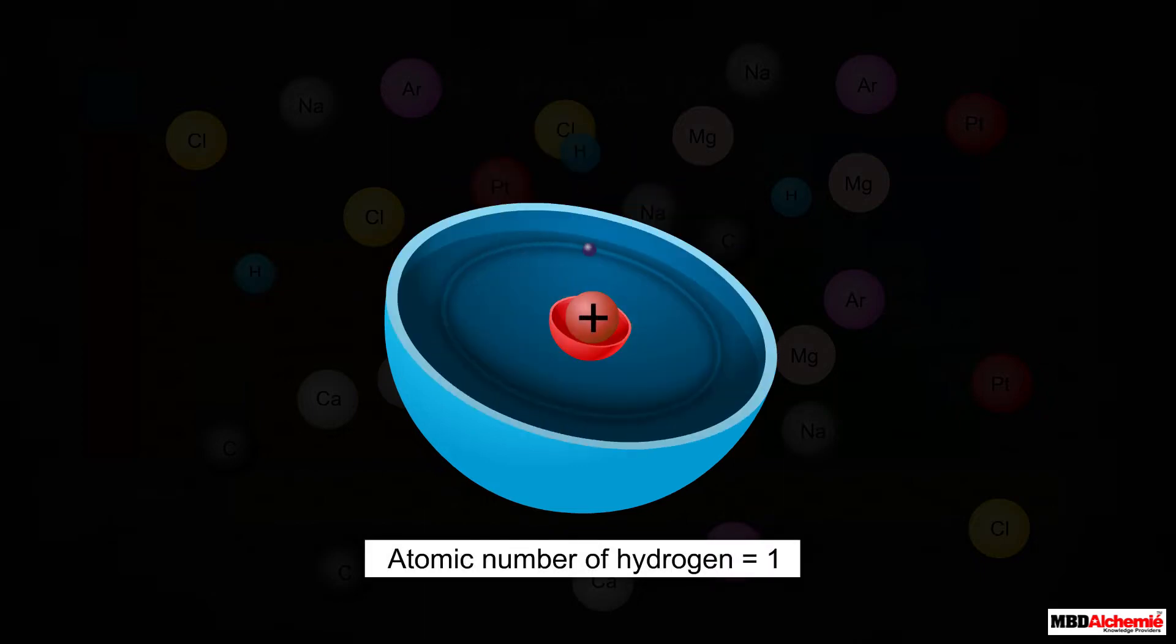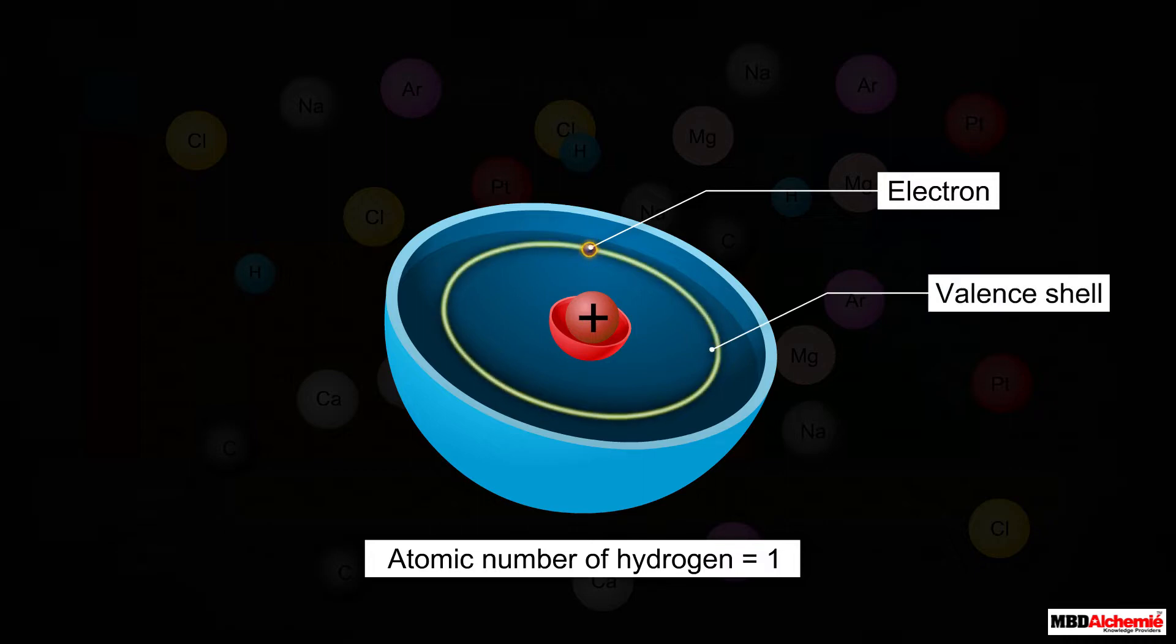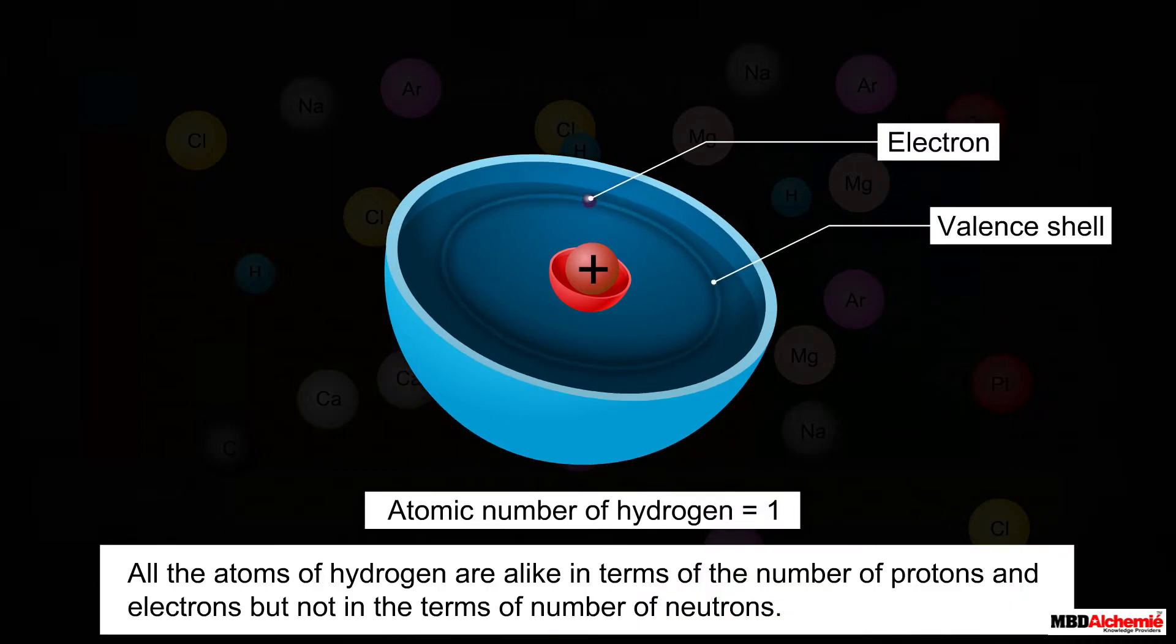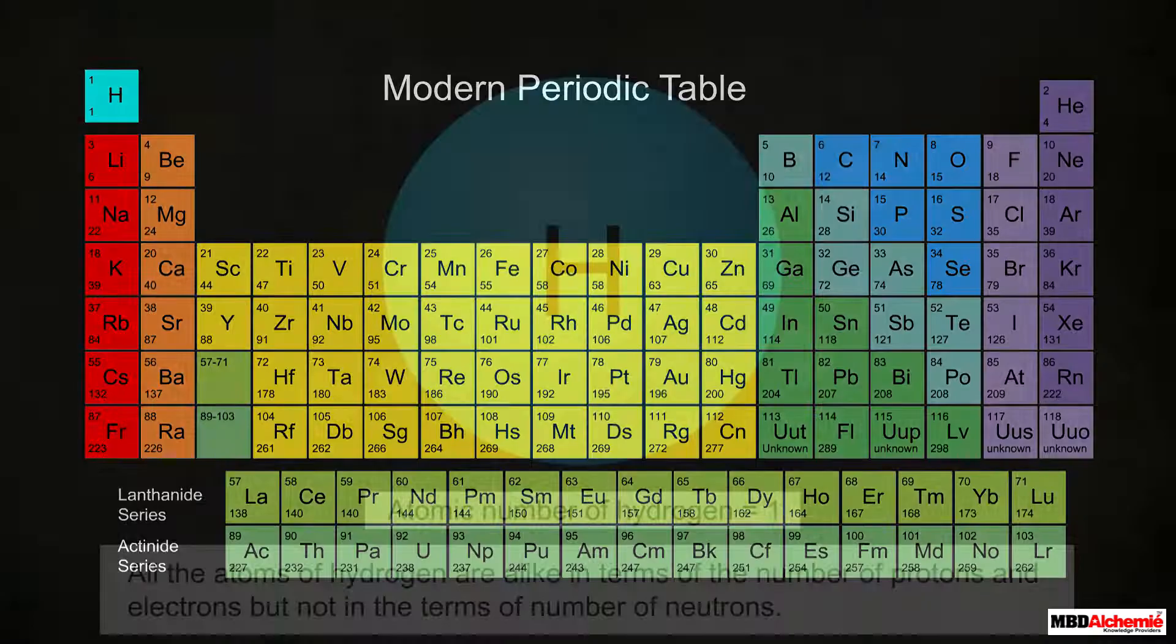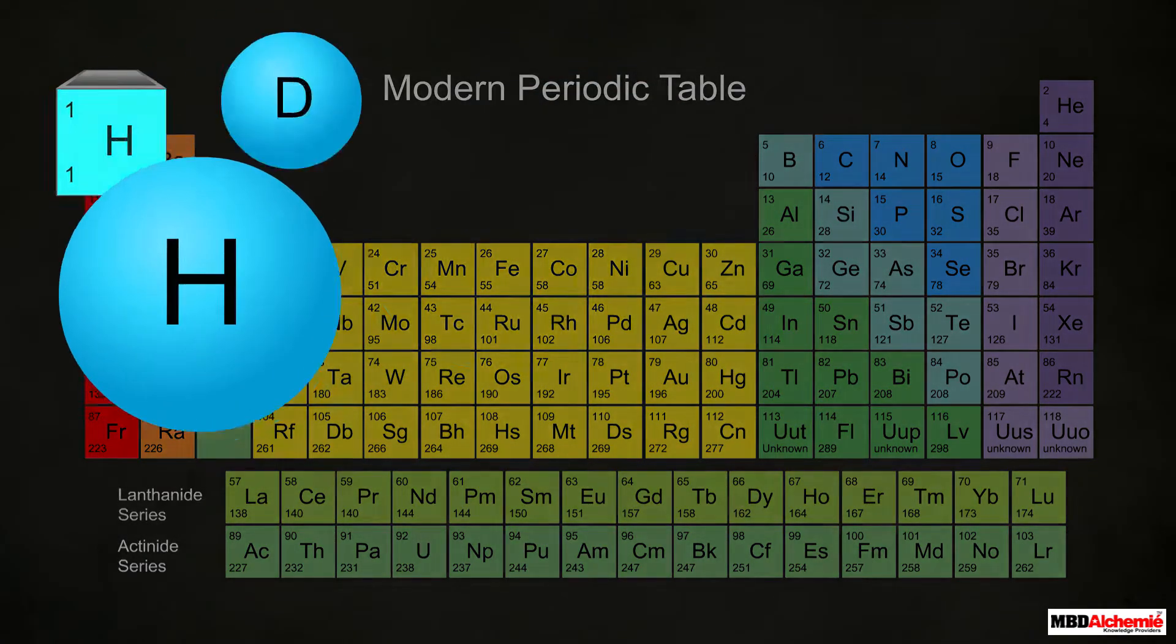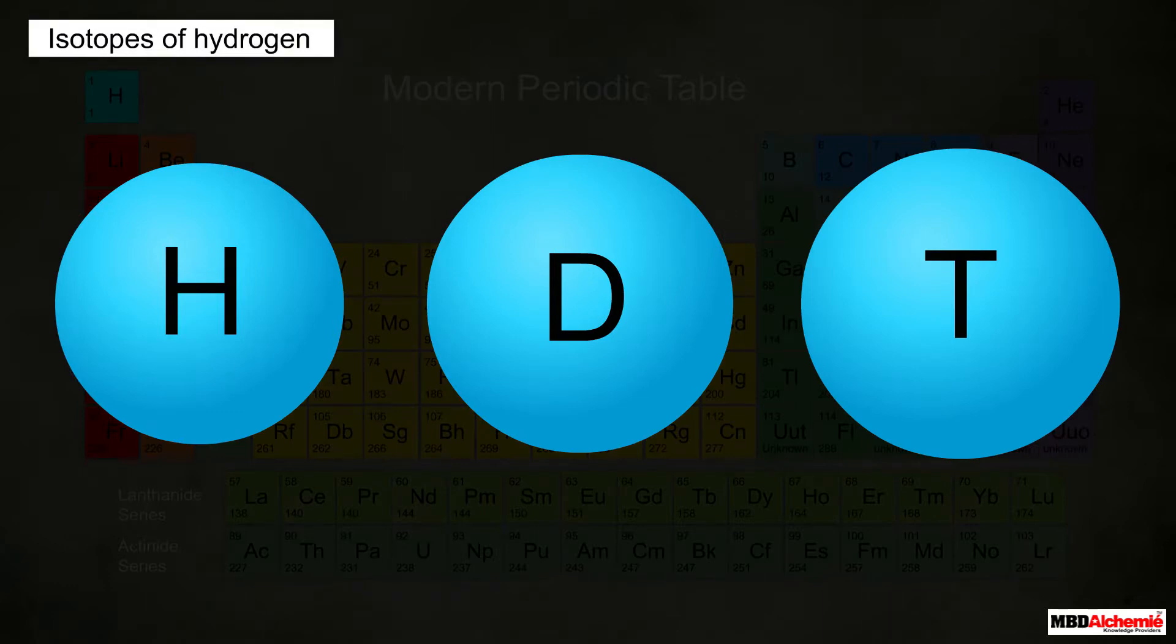...means each of its atoms has one proton in its nucleus and one electron in its first shell, which is also its valence shell. All atoms of hydrogen are alike in terms of the number of protons and electrons, but not in the number of neutrons. Based on the number of neutrons present, there are three isotopes of hydrogen that exist.